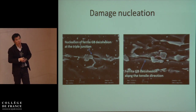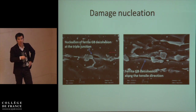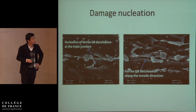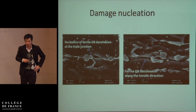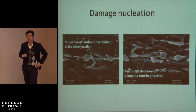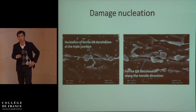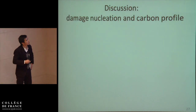This defect grows as a crack along the ferrite grain boundaries parallel to the tensile axis, which is very interesting. Now we have an idea of how this graded DP steel is broken, and maybe it is time to discuss why the carbon profile can have an effect on the damage behavior.